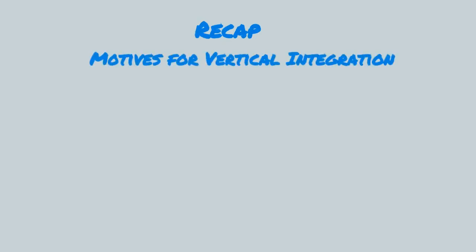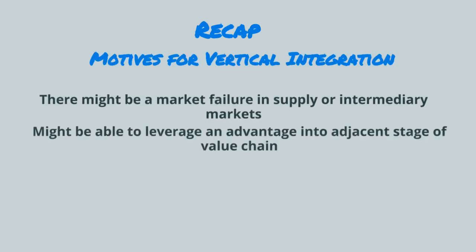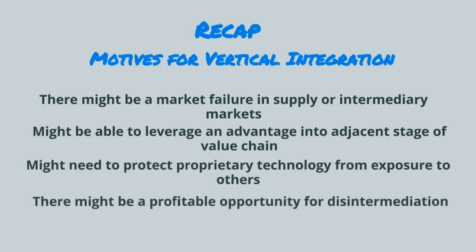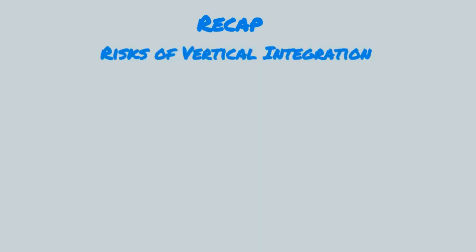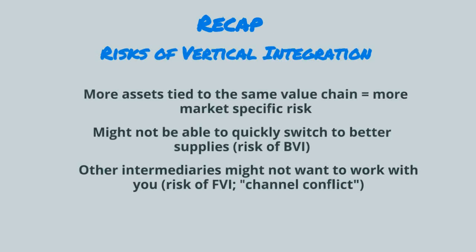To recap: motives for vertical integration include solving for a market failure in supply or intermediary markets, leveraging an advantage into adjacent stages of the value chain, protecting a proprietary technology that might be exposed to others, or exploiting a profitable opportunity for disintermediation. Risks of vertical integration include having more market-specific risk, not being able to quickly switch to better supplies, having other intermediaries not want to work with you, and loss of focus.